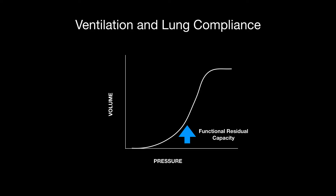The best compliance in your lungs occurs when your lungs are at functional residual capacity. If your lungs are over-distended, there's not much change in volume. If your lungs are under-distended, there's also not much change in volume, because compliance is worse at both of those extremes.